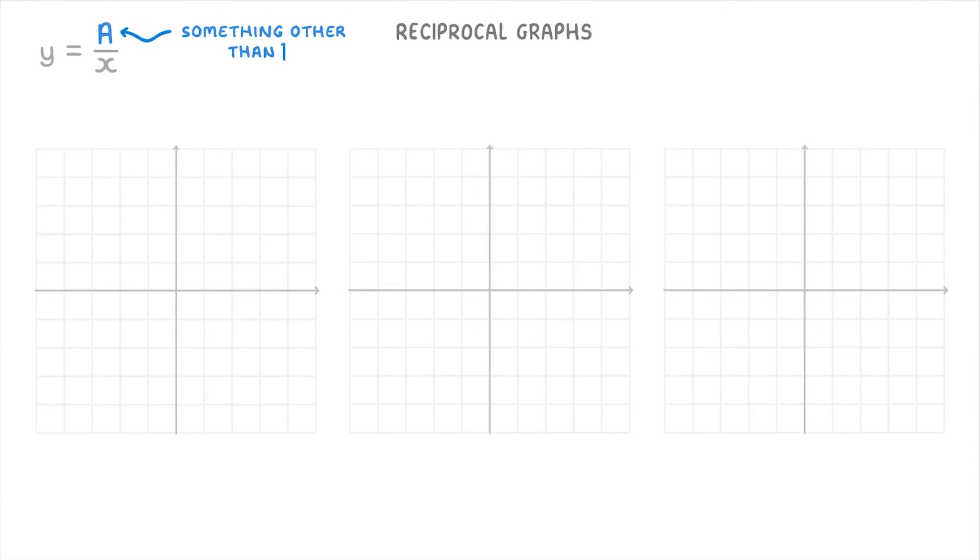Now that we've seen what the simple 1 over x graph looks like, we need to cover what happens when this number on top is something other than 1. And there are really three possibilities you need to know about. Namely, when the value on top is bigger than 1, when the value on top is between 0 and 1, and when the value on top is a negative number.